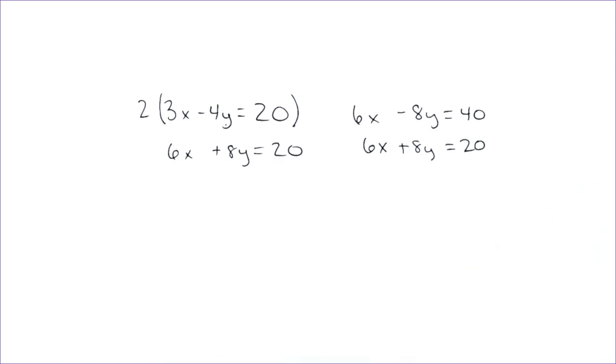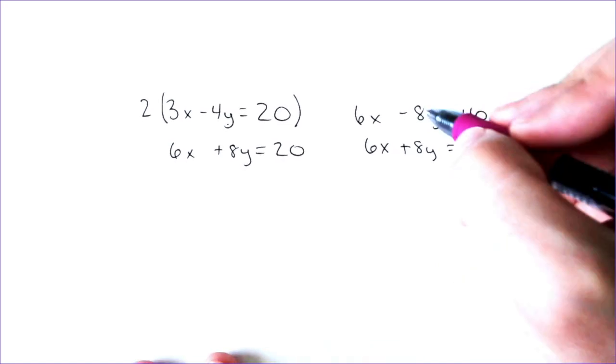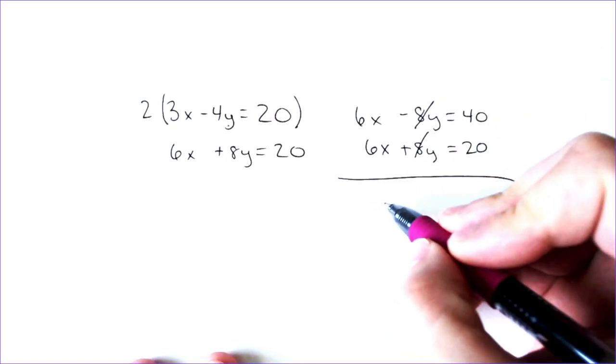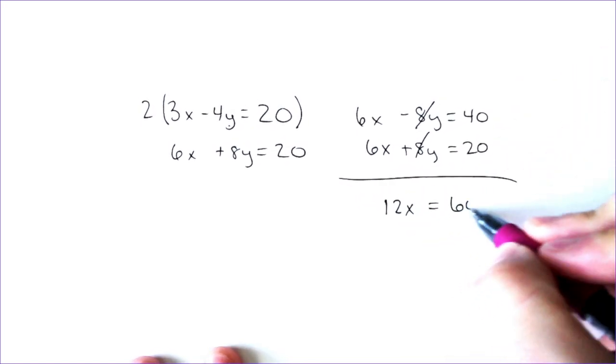Well, in this case, if we add straight down, the y's do eliminate, but we end up with 12x is equal to 60.